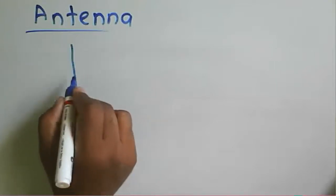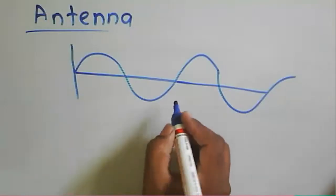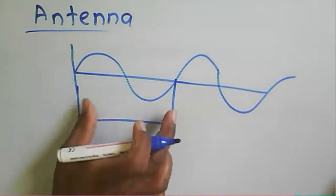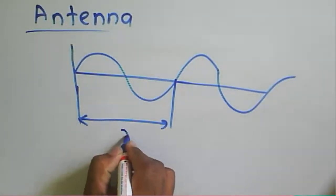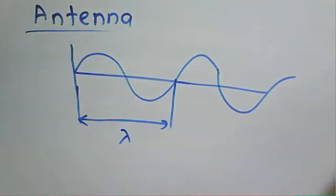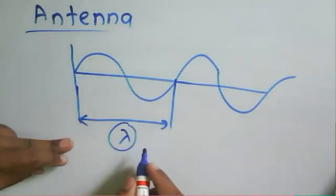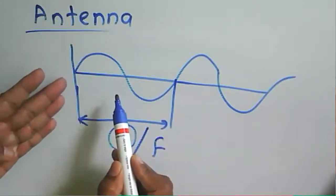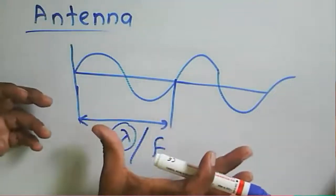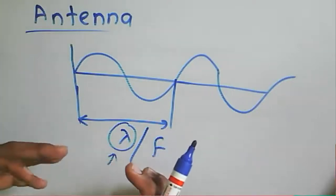A wave is nothing but a sinusoidal variation, infinite in extent. If we consider one period of a wave, we can calculate the wavelength for that particular period. We can also express this in terms of frequency: if frequency is larger, the wave will be smaller; if frequency is smaller, the wave will be broader. So the wavelength and frequency are inversely related.